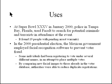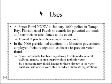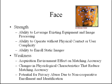One real-world use of face recognition: at Super Bowl XXXV in January 2005, police in Tampa Bay used software called FaceIt to search for potential criminals and terrorists in attendance. They enrolled static booking photos of suspects into the database and were able to identify 19 people with pending arrest warrants without any physical contact or user complicity.